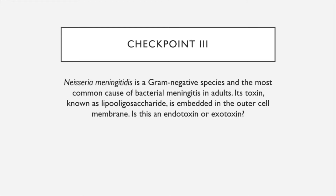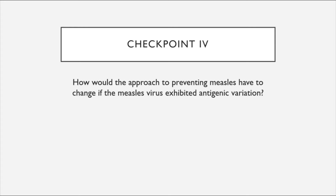Checkpoint: Neisseria meningitidis is a gram-negative species of bacteria and the most common cause of bacterial meningitis in adults. Its toxin, known as lipooligosaccharide, is embedded in the outer cell membrane. Is this an endotoxin or an exotoxin? Additional checkpoint: How would the approach to preventing measles have to change if the measles virus exhibited antigenic variation?